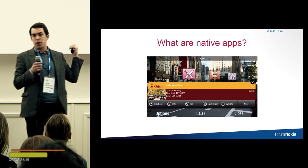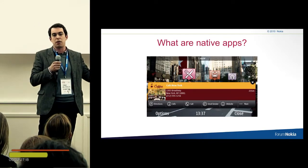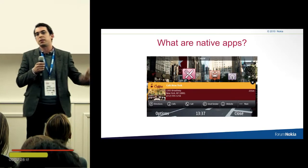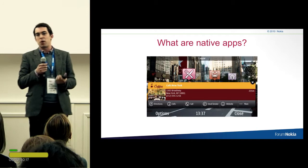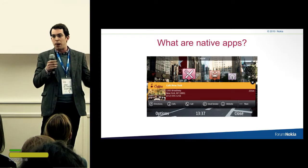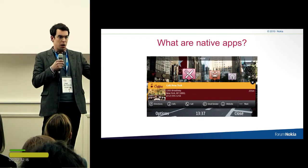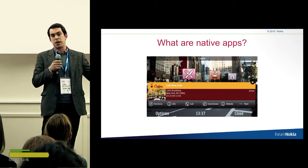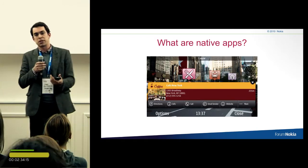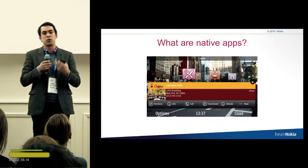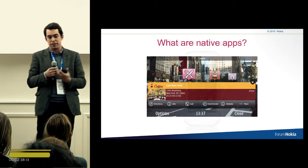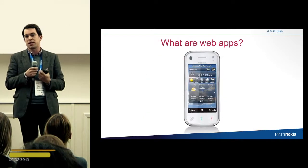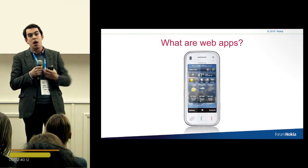What are native apps? A great example is Layer — augmented reality — where you use the capacity of a smartphone to bind together visual aspects with the phone's capabilities and the internet, and you get a really great experience. You need to invest a lot to build such an application.